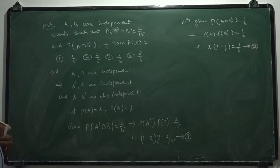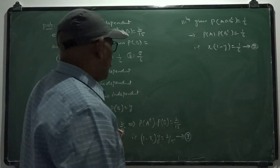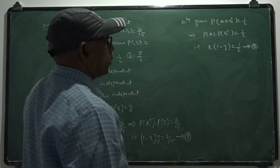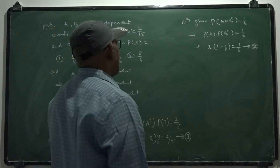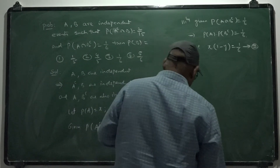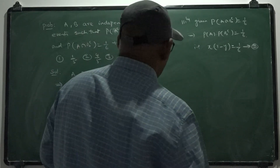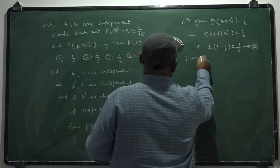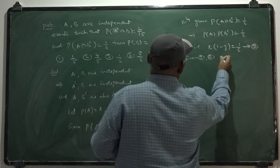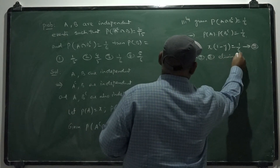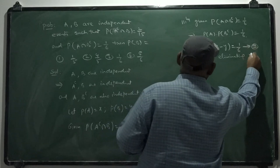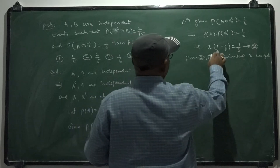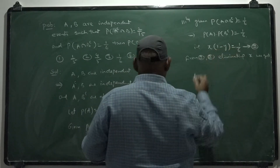Solve equations 1 and 2 to get X and Y. Y gives us the probability of B and X gives us the probability of A. From equations 1 and 2, I will eliminate X to get Y, the probability of B.